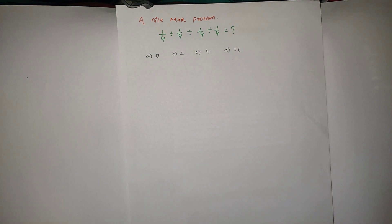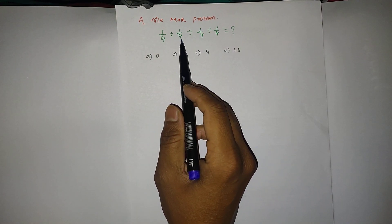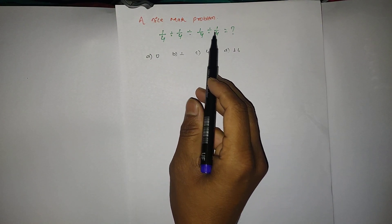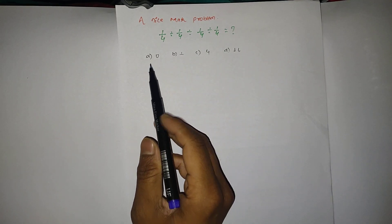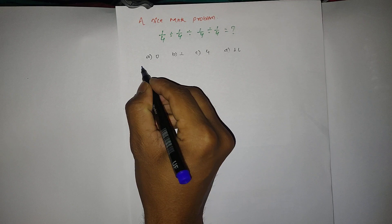Hello everyone, welcome to a new video. Today we have a nice math problem: 1/4 ÷ 1/4 ÷ 1/4 ÷ 1/4 = ? The options are 0, 1, 4, and 16. So let's dive into the question and find the solution.